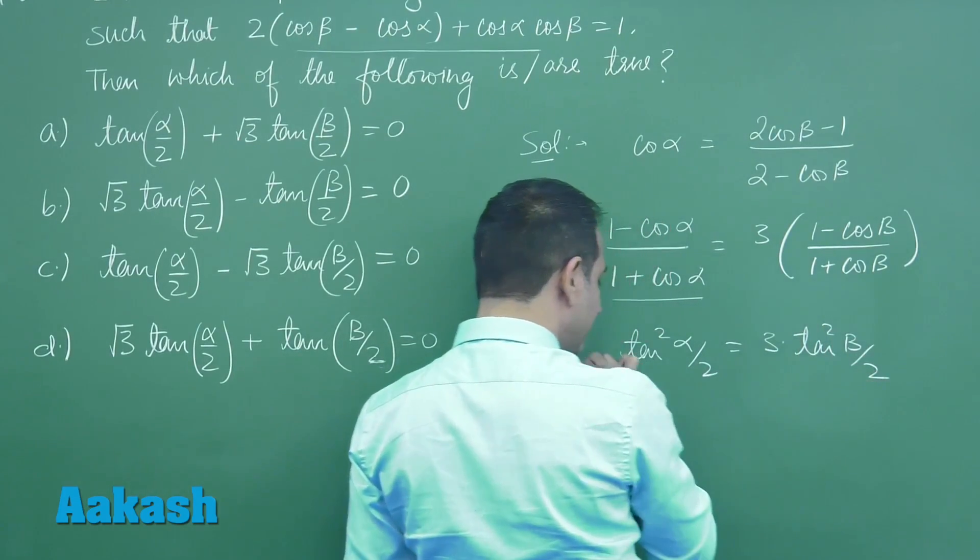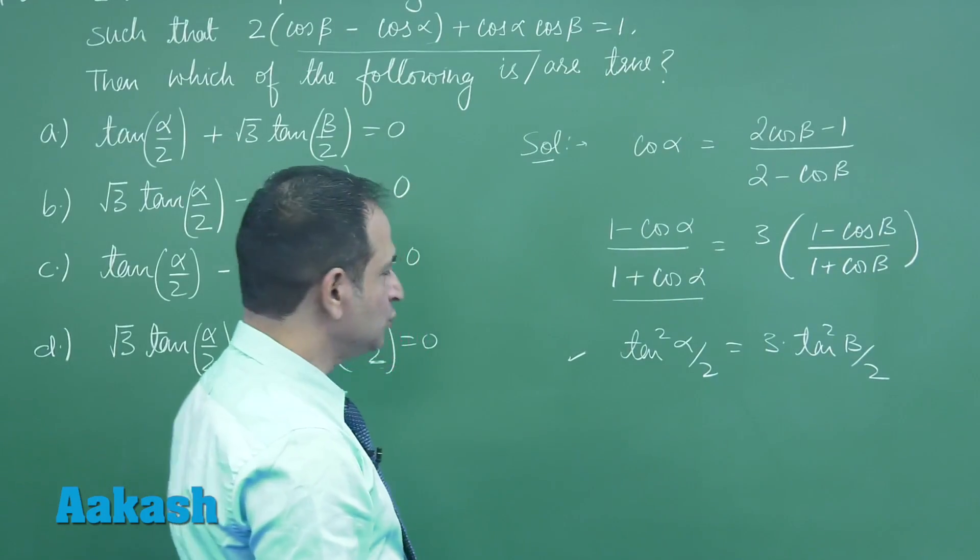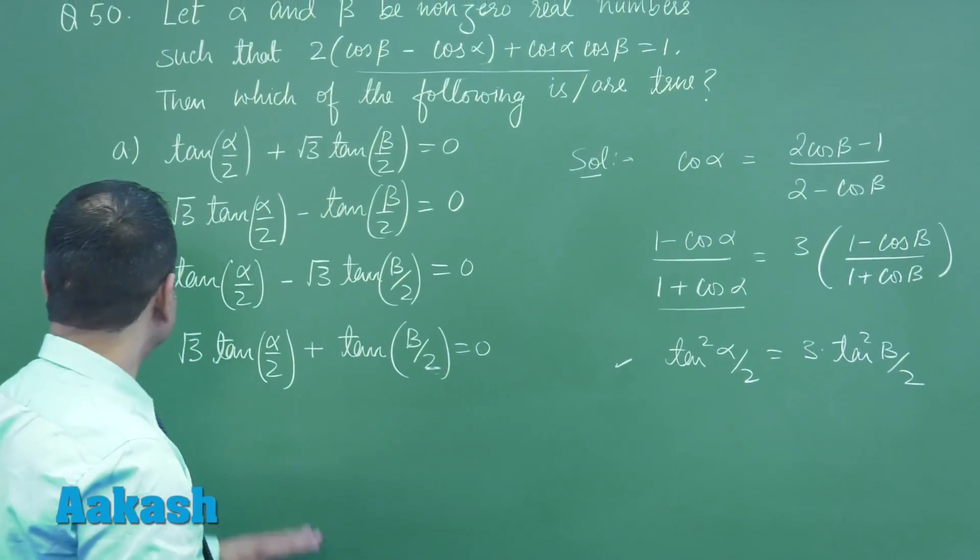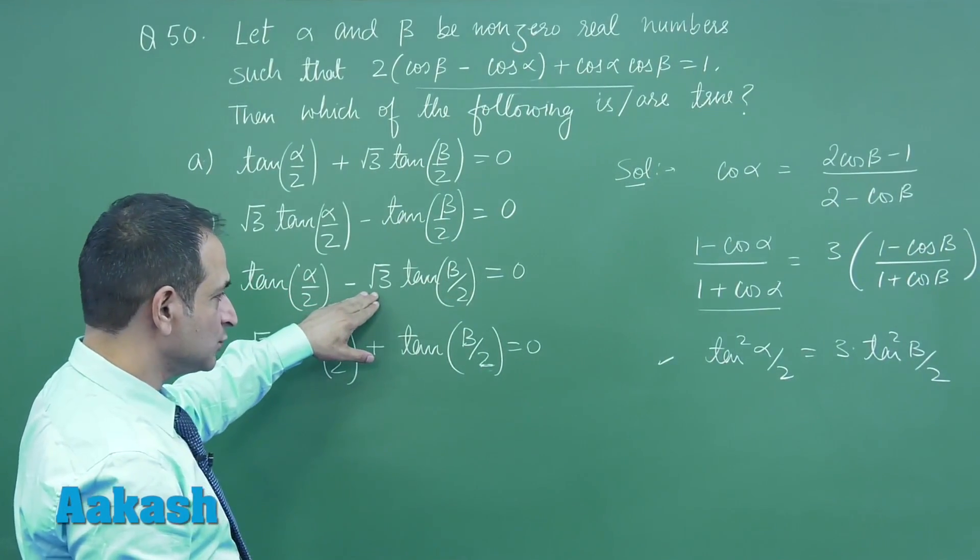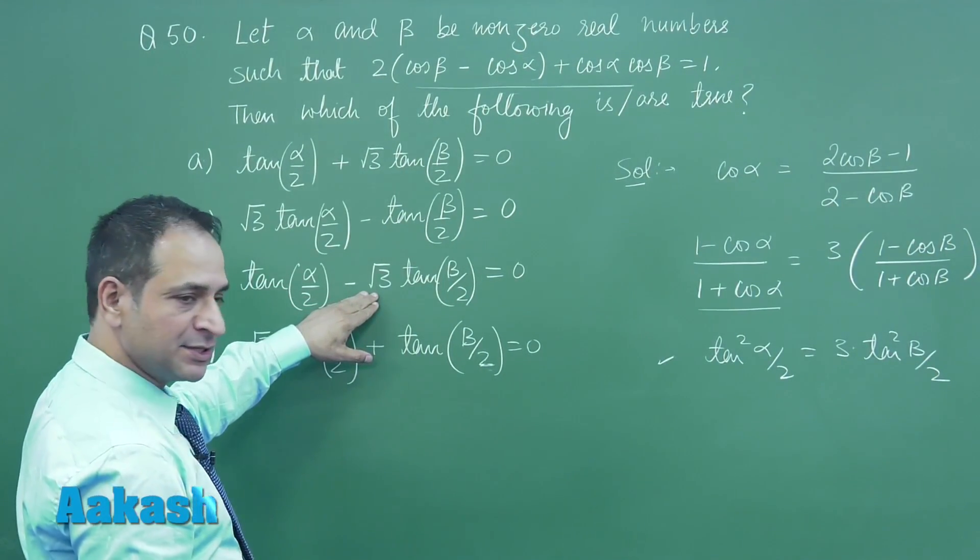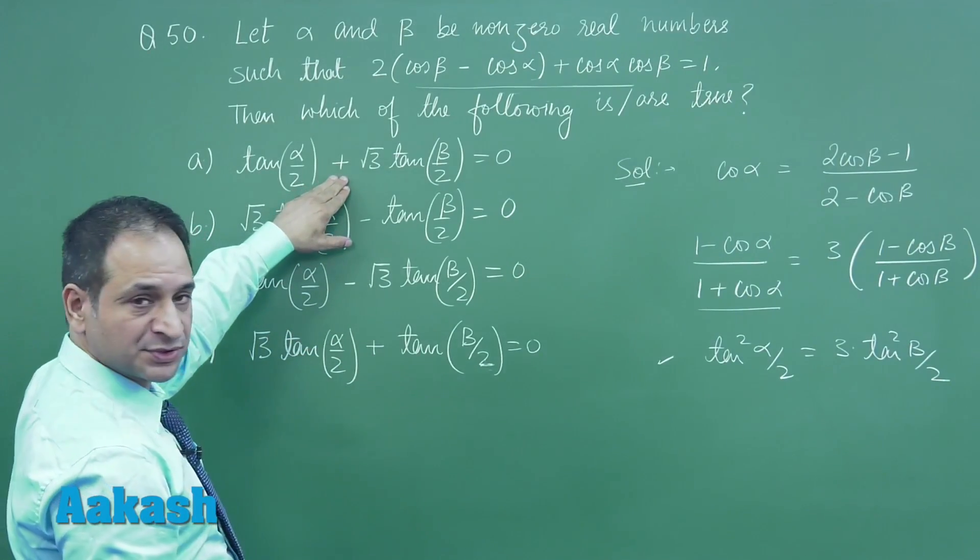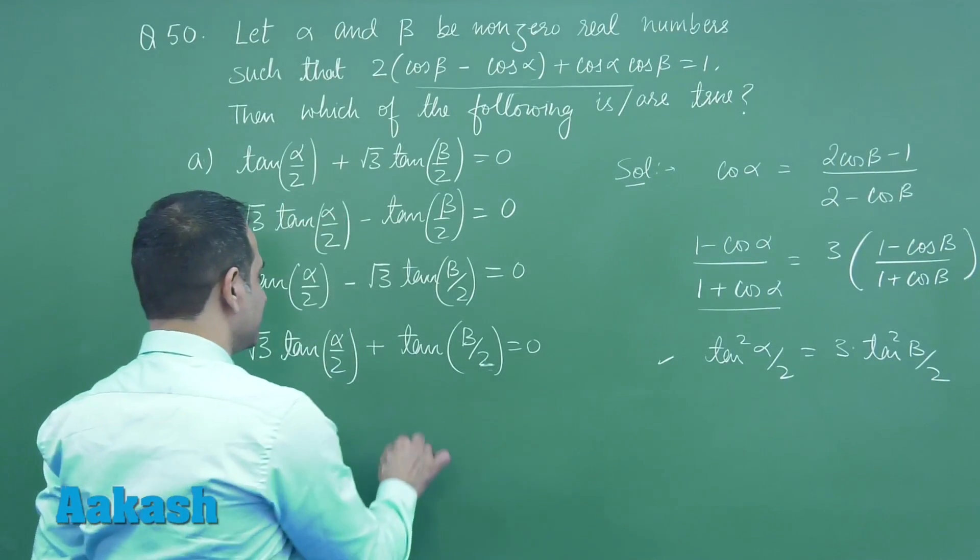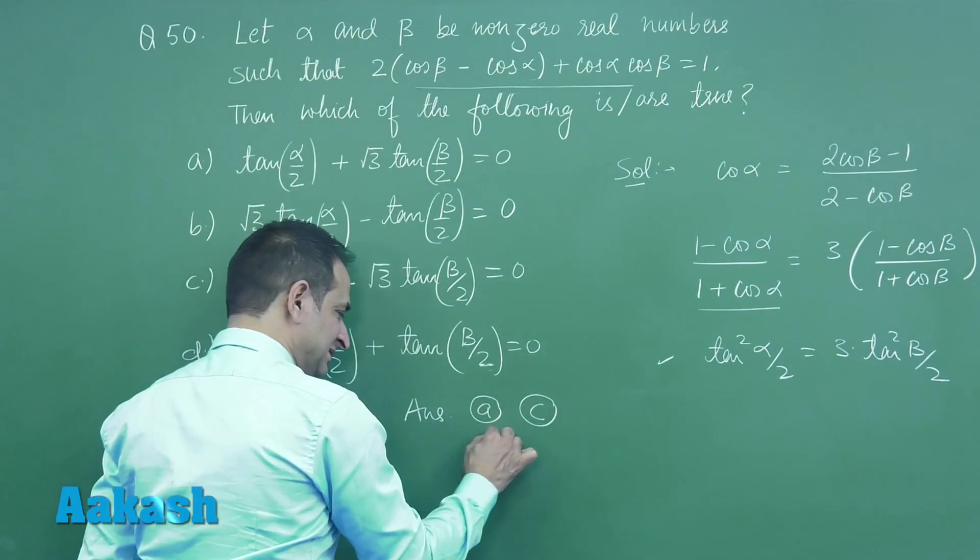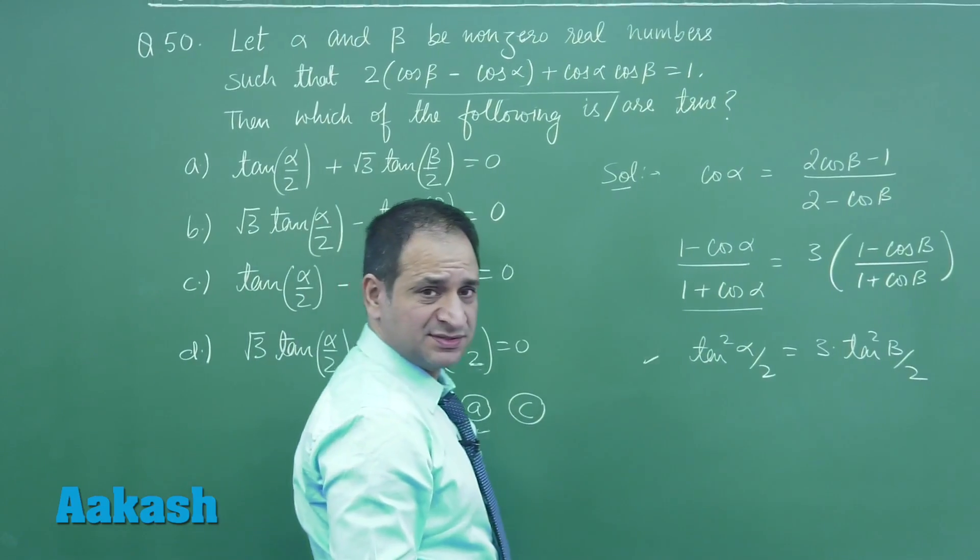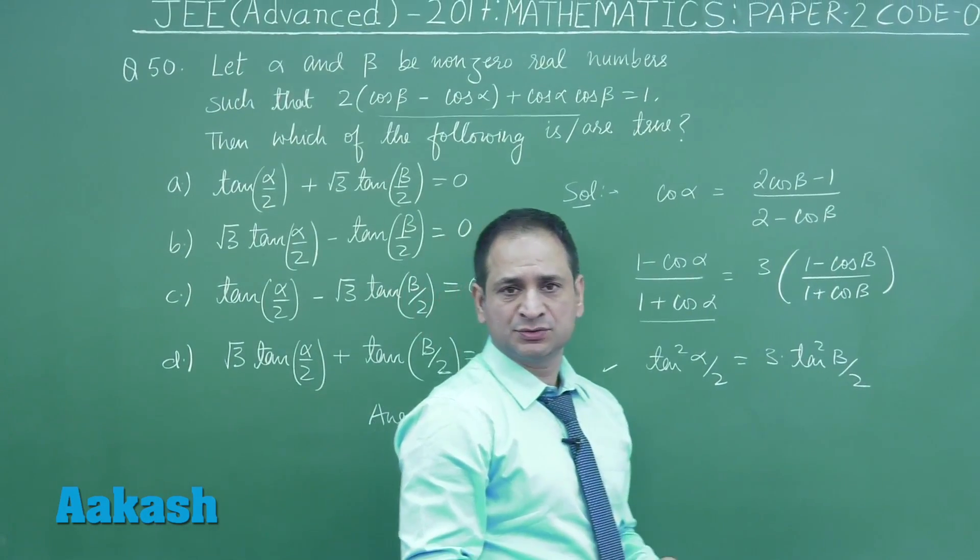So from here we have two options which are correct. One is option c, that is tan alpha by 2 minus root 3 tan beta by 2 equal to 0, and the option first. So the correct answers here are c and option first. This is actually easier one to crack.